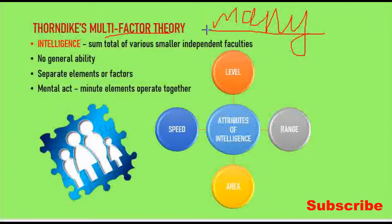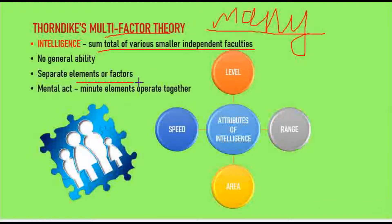Here, multiple factors are involved. According to Thorndike, intelligence is the sum total of various smaller independent faculties. These separate elements or factors will be there, and this is the sum total.